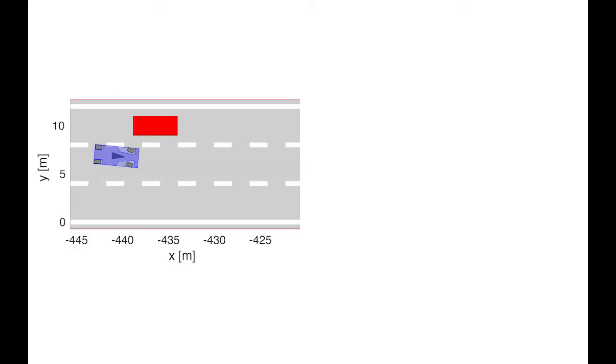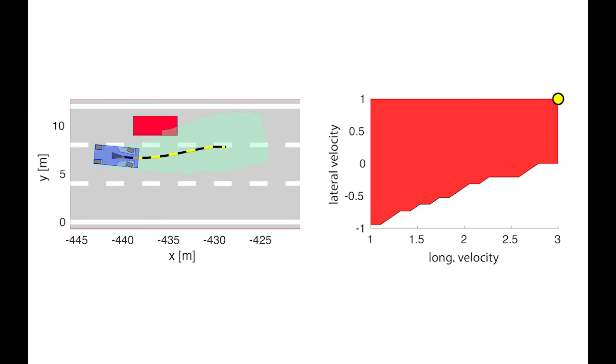We demonstrate how our method works online using a self-driving car as an example. At the beginning of each planning iteration, the RL agent selects the parameterized plan specifying the car's longitudinal and lateral velocities. In the parameter space on the right, we find that the selected parameter value is unsafe.